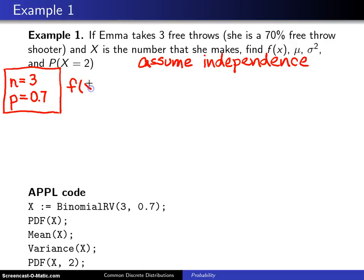f of x will be n choose x times p to the x power times 1 minus p raised to the n minus x power, and that is over the support of the distribution, which is 0, 1, 2, and 3.